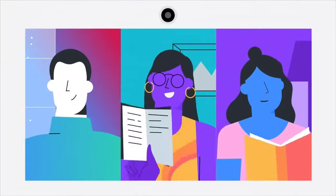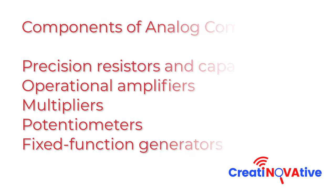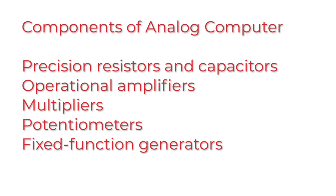The components of analog computers include precision resistors and capacitors, operational amplifiers, multipliers, potentiometers, and fixed function generators.